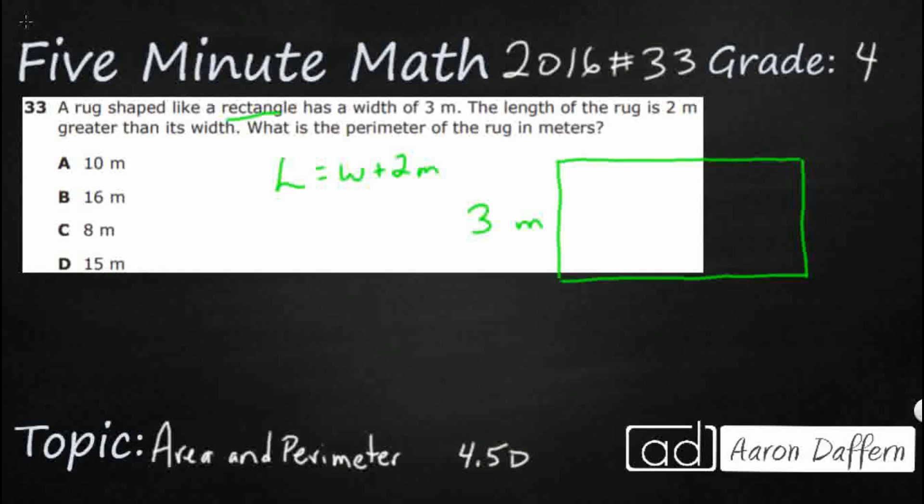So what we have here is we've got our length. We can really just substitute this 3 in right there. Most of us could probably do this in our head, but this is actually algebra here. We're using some variables and unknowns because that's what they gave us. They said our length is our width plus 2. So we've got 3 meters plus 2 meters, and that's going to be pretty easy. That's going to be our 5 meters.